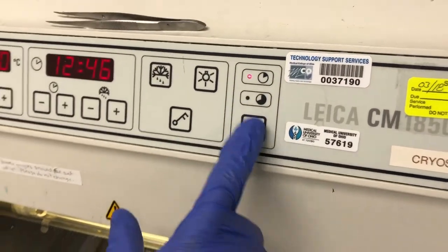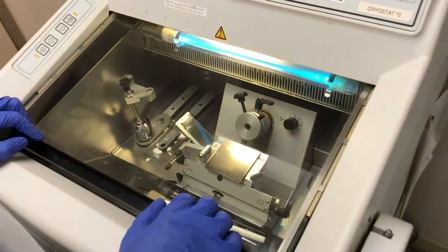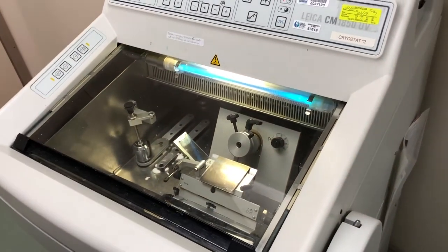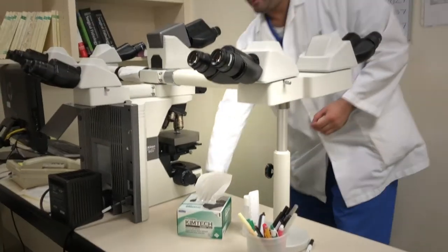Press the UVC button to turn on the ultraviolet light which helps to clean the machine. You are now ready to view the slides under the microscope.